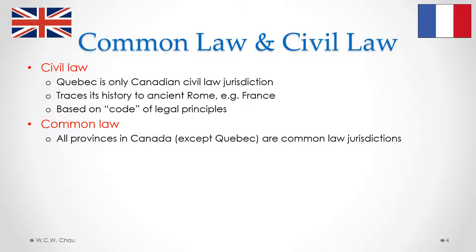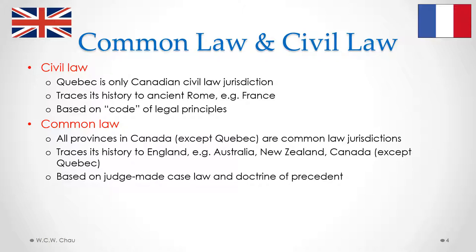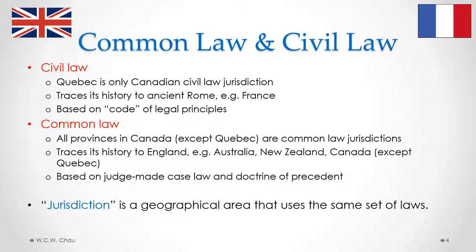The civil law system traces its history all the way back to ancient Rome and in particular France, and is essentially based on a code of legal principles. The common law system traces its history back to England, so any country that used to be a colony of England is likely to have a common law system — for example, Australia, New Zealand, Canada, and the United States. The distinctive characteristic of the common law system is much greater reliance on judge-made case law, looking carefully at written decisions of previous courts. This legal approach is called the doctrine of precedent.